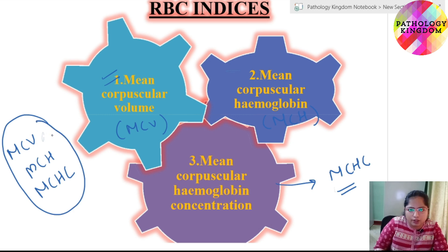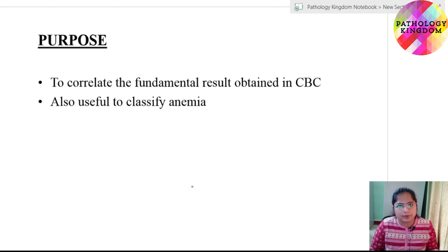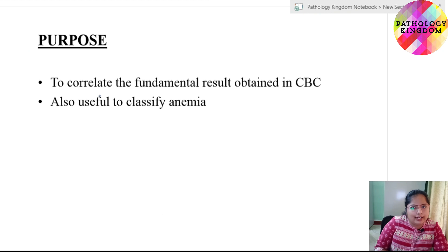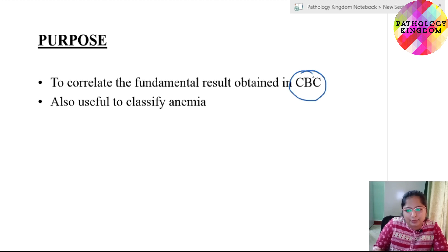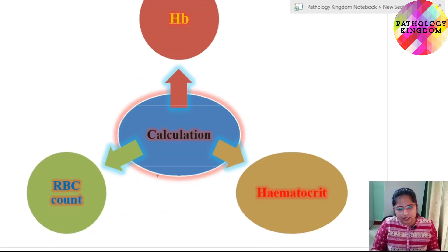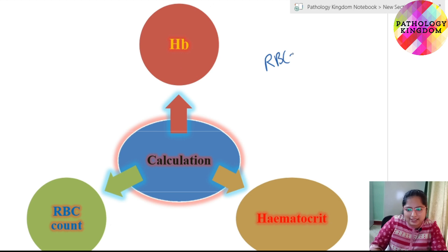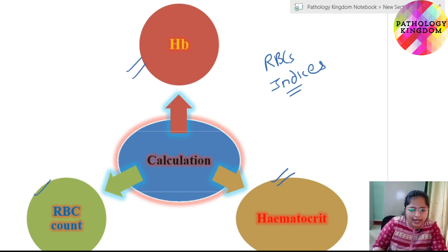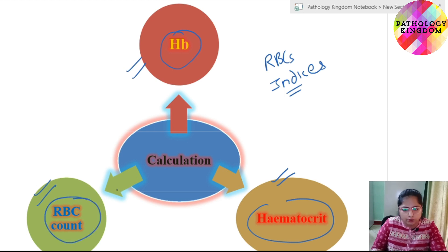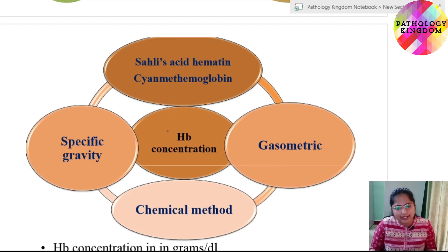MCV is mean corpuscular volume, MCH is mean corpuscular hemoglobin, and MCHC is mean corpuscular hemoglobin concentration. The purpose of studying RBC indices is to correlate the fundamental result obtained in CBC, to verify the result obtained in complete blood count, and also to classify anemia. For calculation of various RBC indices, we need the values of hemoglobin, hematocrit, and RBC count.